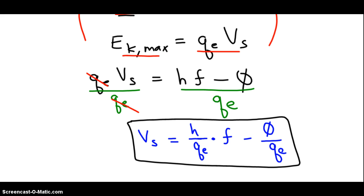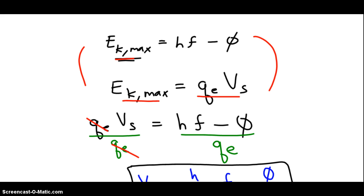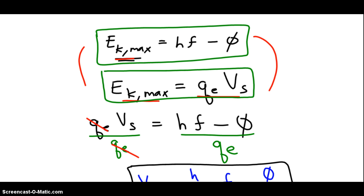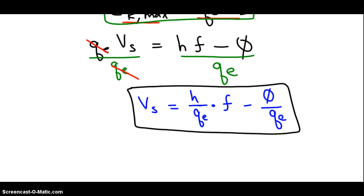This is the second equation we can use to produce a graph. Again, how did I get to this equation? I just combined this equation, the energy exchange equation for one electron and one photon. I combined it with the stopping voltage equation, and then I rearranged to get this.